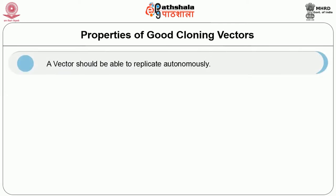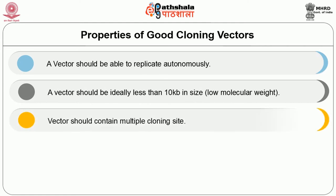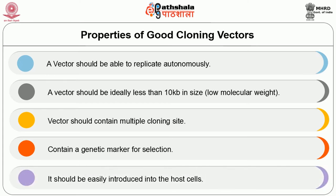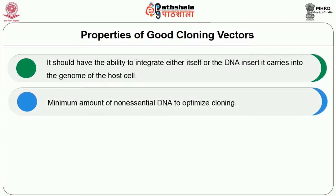A vector should be able to replicate autonomously. It should ideally be less than 10 KB in size. It should contain multiple cloning sites, and at least one genetic marker for selection. It should be easily reintroduced into the host cells, and have the ability to integrate either itself or the DNA insert into the genome of the host cell, with a minimum amount of non-essential DNA.